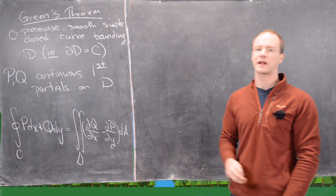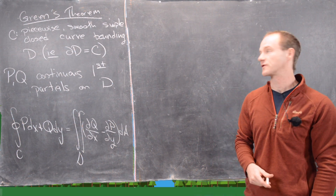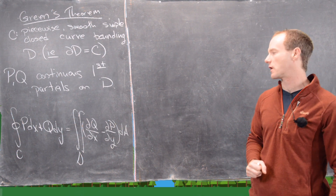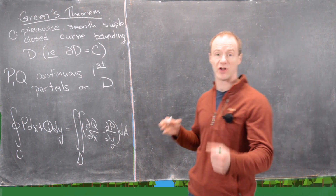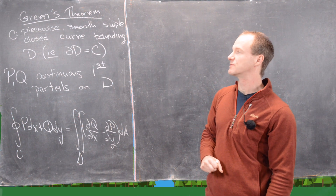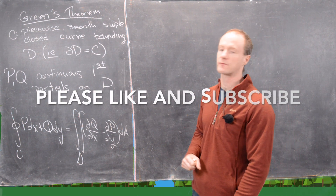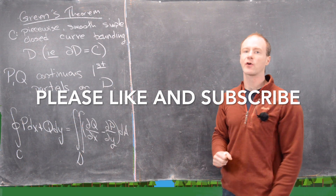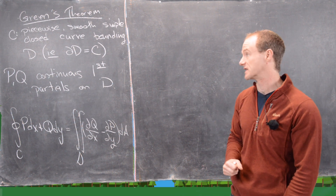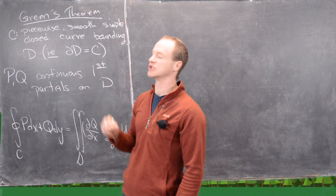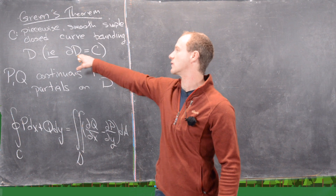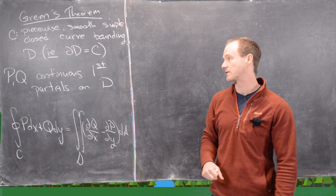In this video we're going to look at a couple of vector forms of Green's Theorem. Before we do that, I just want to recall the statement in a non-vector form. Suppose we have a piecewise smooth, simple, closed curve C, also positively oriented, bounding a region D. That's the same as saying the boundary of D equals C, or del D equals C.